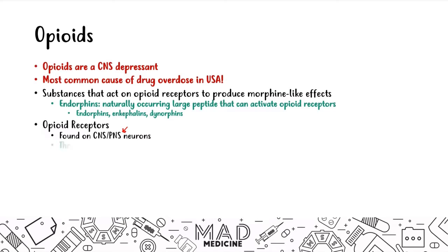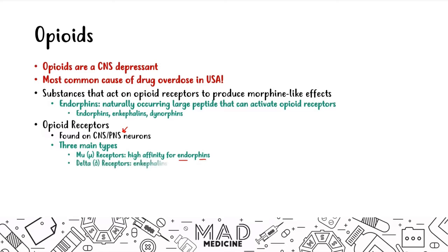There are three main receptor types. You have the mu receptor, which has a high affinity for endorphins — which is pretty much what opioids act like. Then you have the delta receptor, which has a high affinity for enkephalins. And then you have the kappa receptor, which binds to dynorphins.